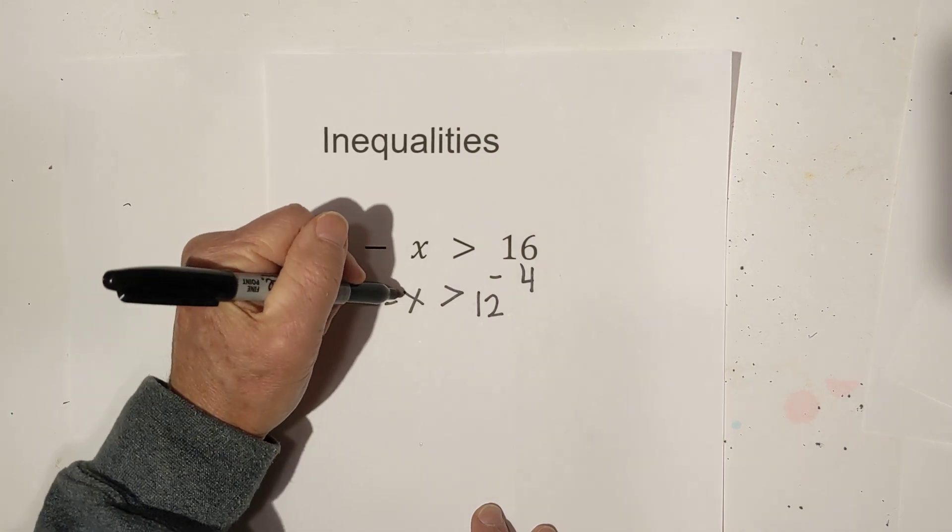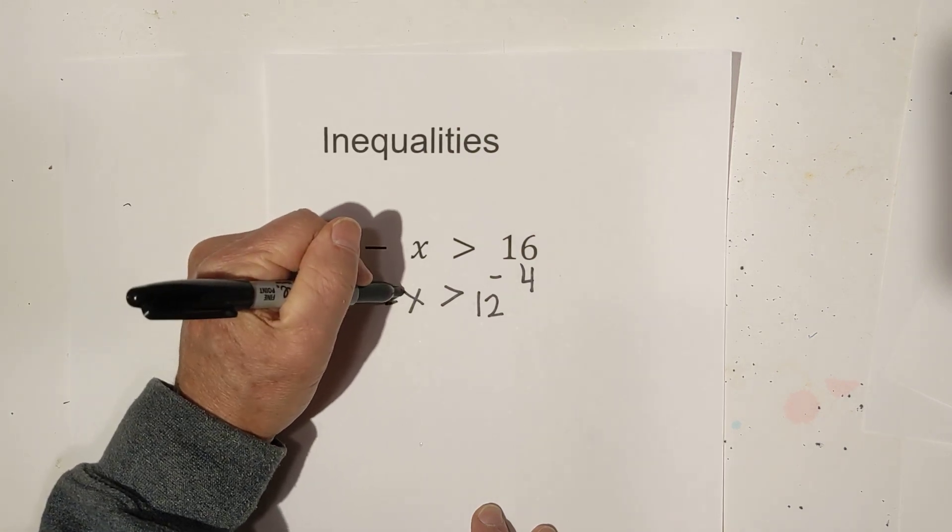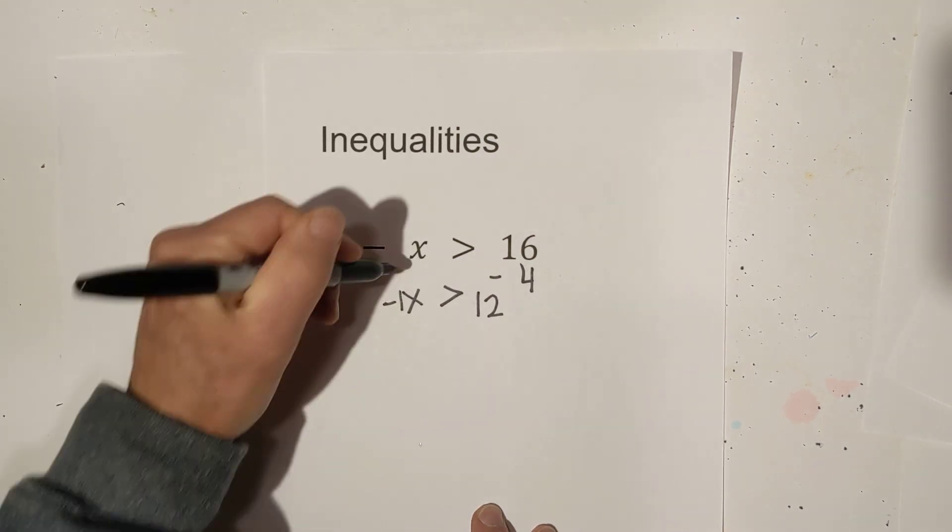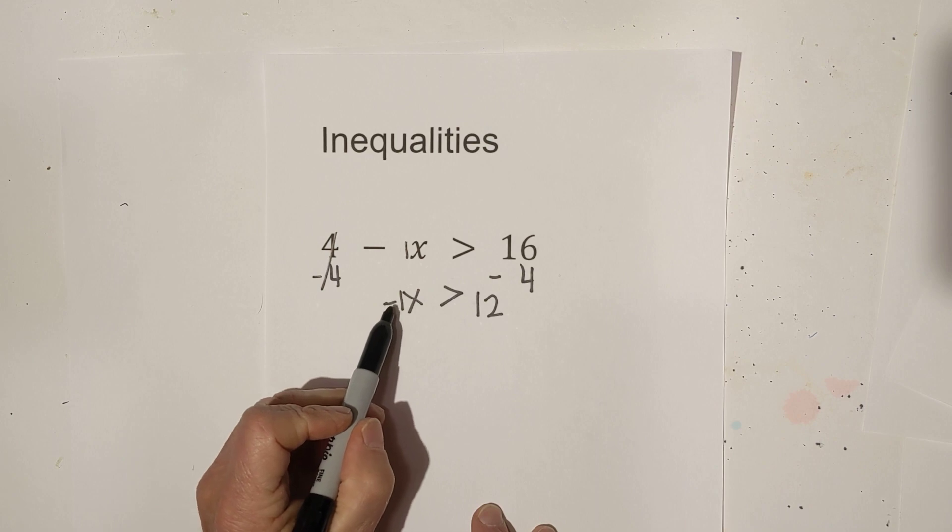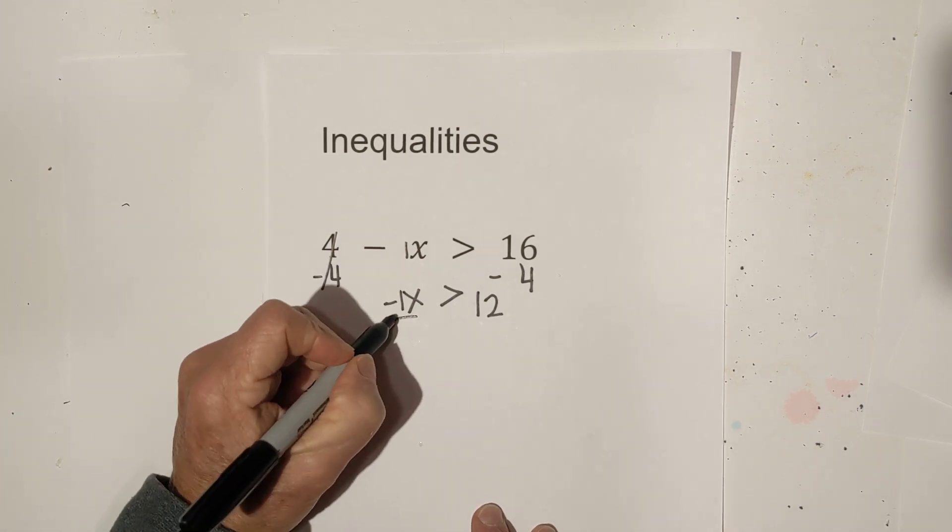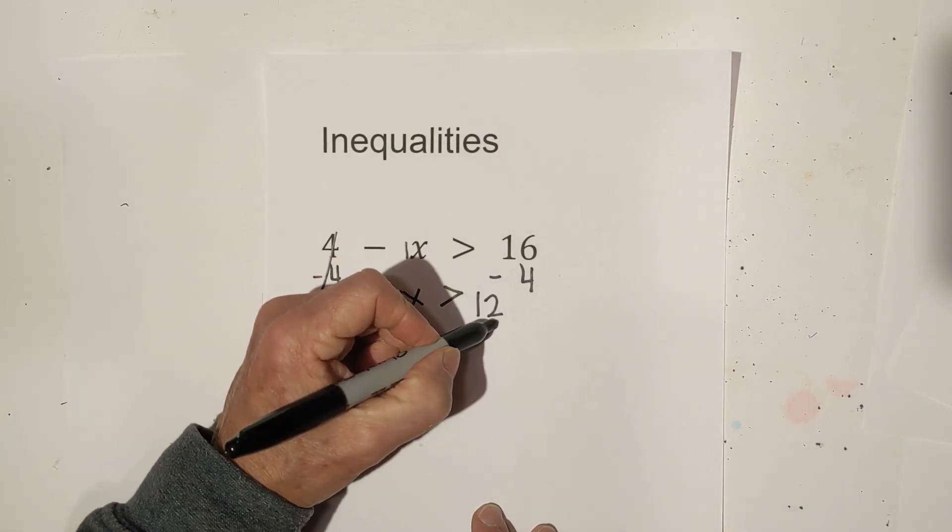Now in order to make this a little easier when you have the x you can think of a 1 in front of it. So you actually have a minus 1x. So in order to get rid of the negative 1 we divide by negative 1 for both sides.